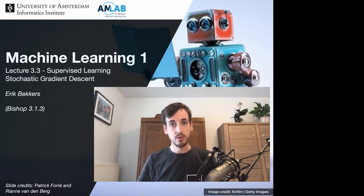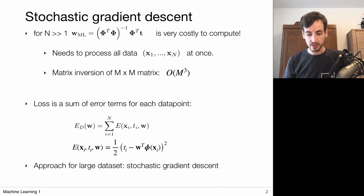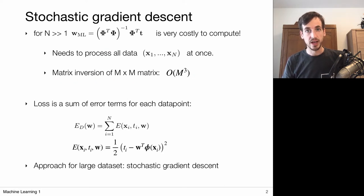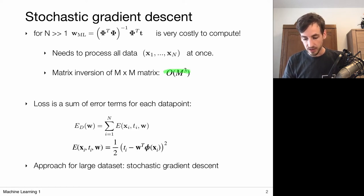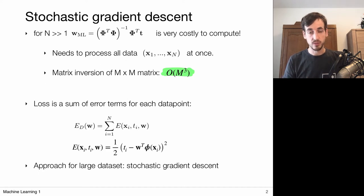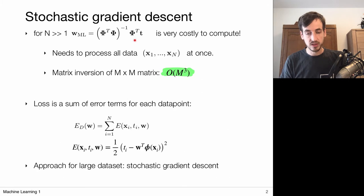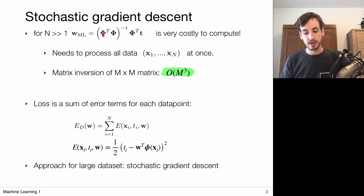In this video, we're going to present an alternative, more compute-friendly approach to obtaining an optimal W. In our direct approach, the closed-form solution requires processing all data at once and, most importantly, computing a matrix inversion of an M by M matrix. Taking this inverse is computationally very demanding — its complexity is on the order of M cubed, where M is the number of basis functions. As M grows, the compute and memory requirements grow very rapidly.